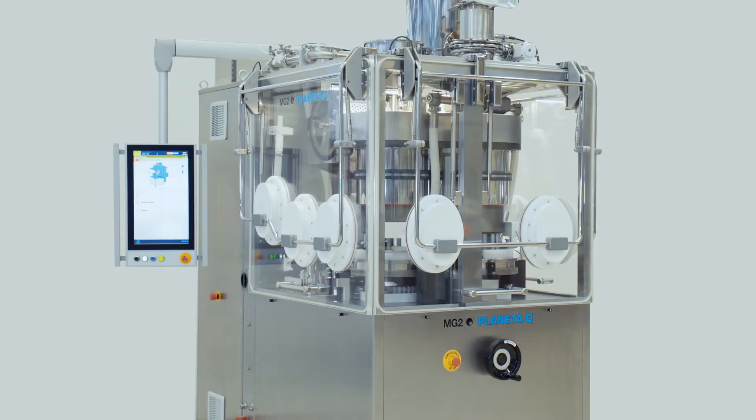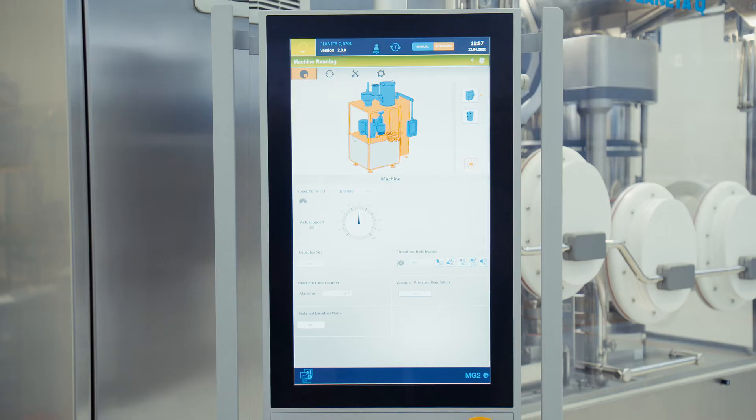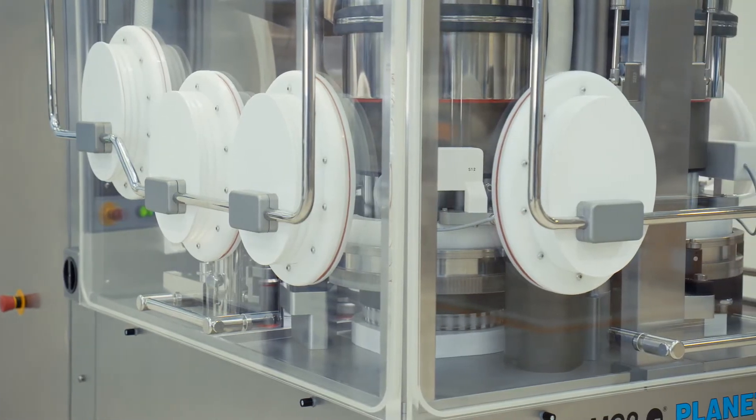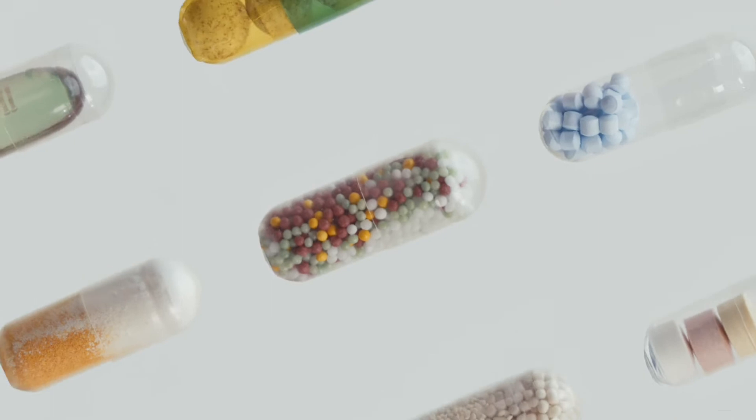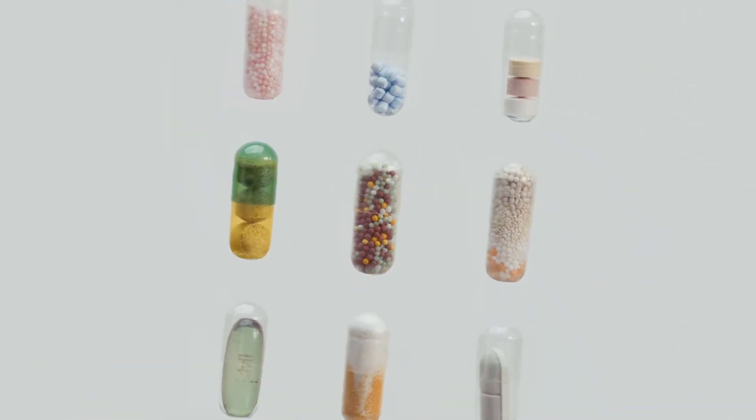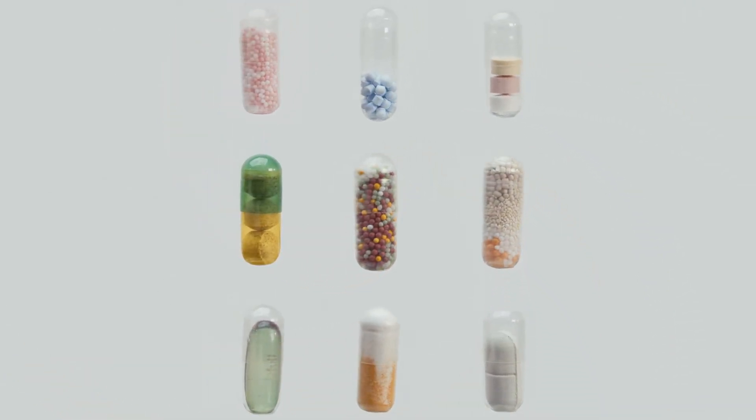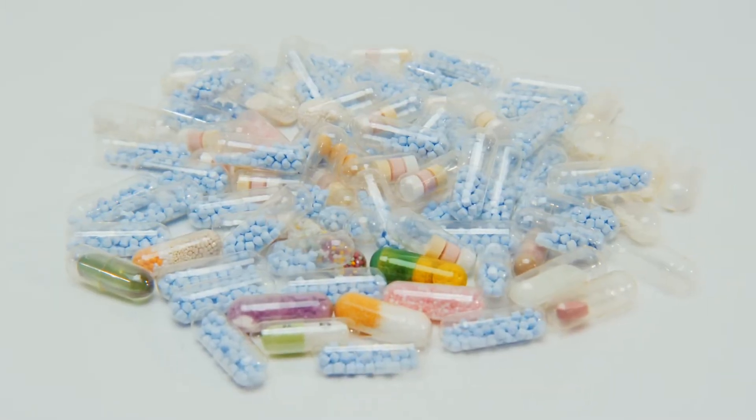Planeta Q focuses on great flexibility in terms of both production speed up to 100,000 capsules per hour and product handling: powder, low dosages for inhalation, pellets, tablets, micro tablets, capsule into capsule, liquid alone or in combination.